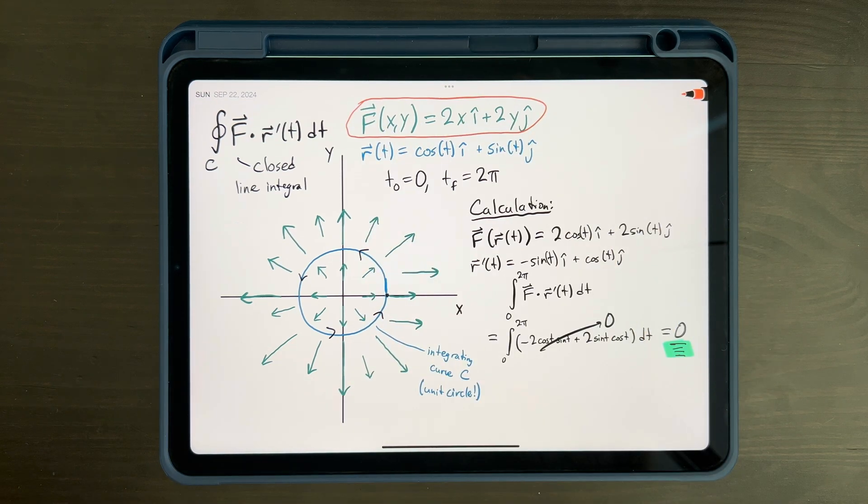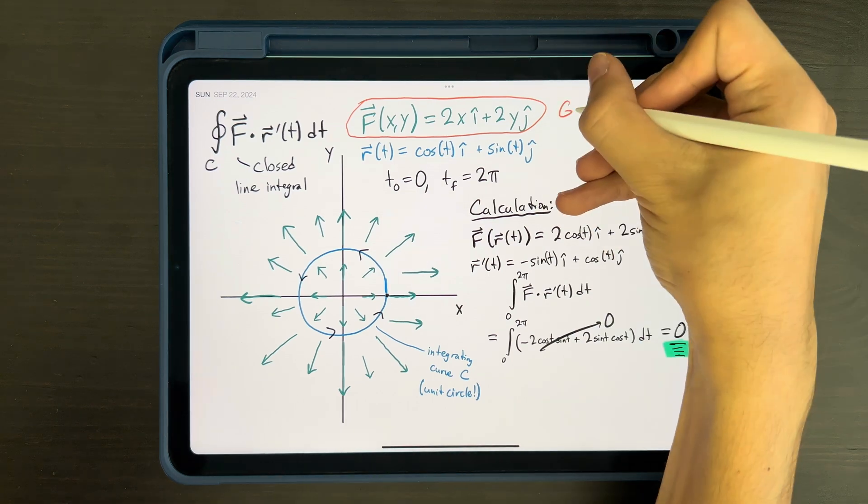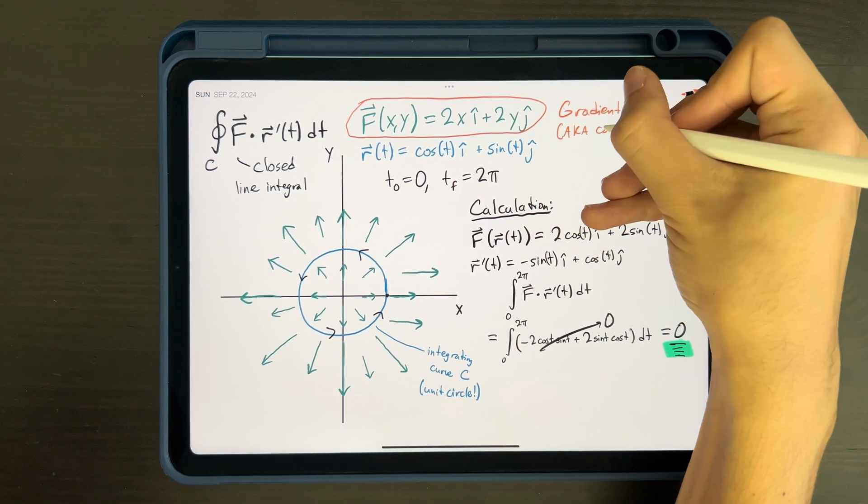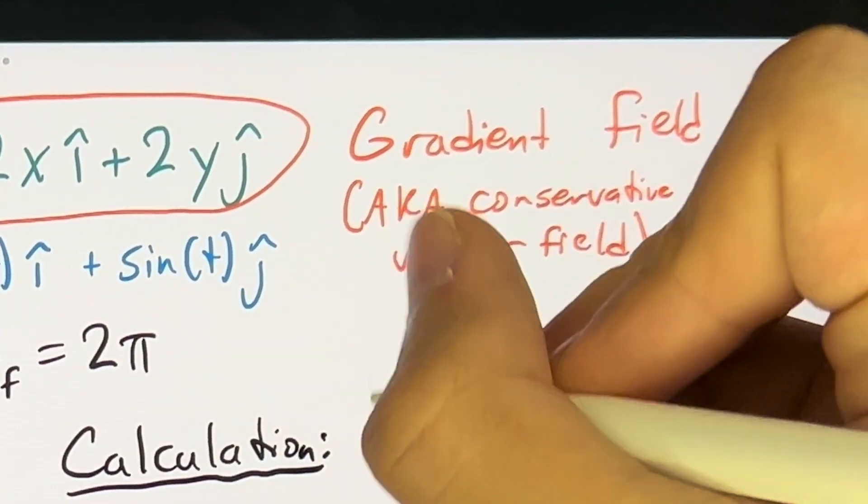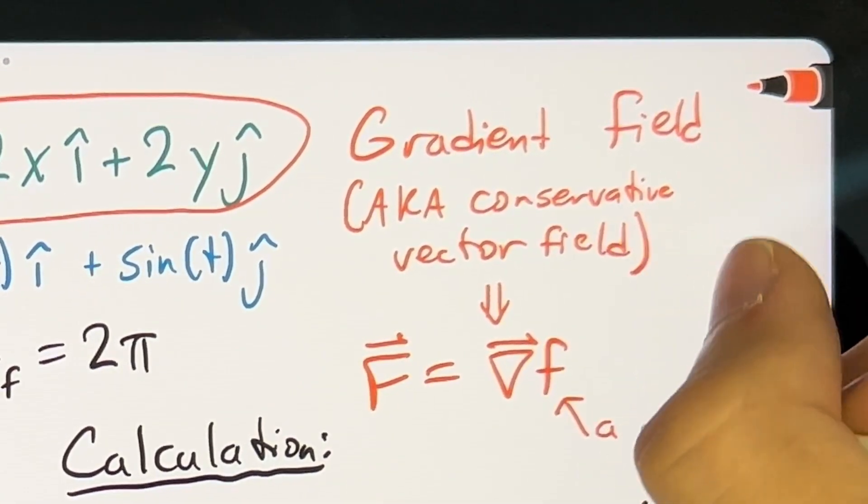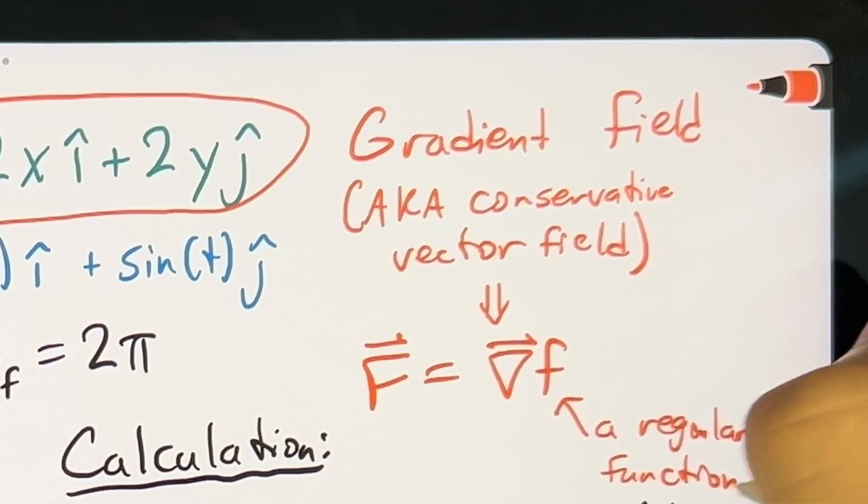Specifically, this vector field just so happens to be a gradient field, sometimes also called a conservative vector field. In other words, this vector field is also the gradient of some regular function.